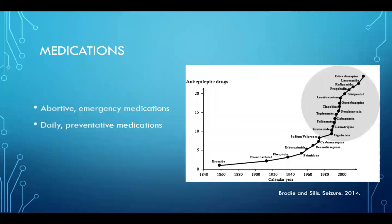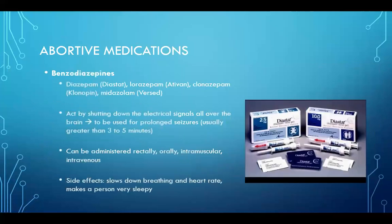I'm going to briefly discuss some of the medications used for seizures. The number of medications has rapidly expanded over the last few decades, but the two main categories are abortive or emergency medications given at the time of a seizure, and daily preventative medications to prevent seizures from happening. The group commonly used as abortive medications are benzodiazepines. Common names include diazepam or Diastat, lorazepam or Ativan, clonazepam or Klonopin, and midazolam or Versed.